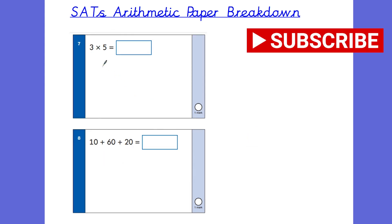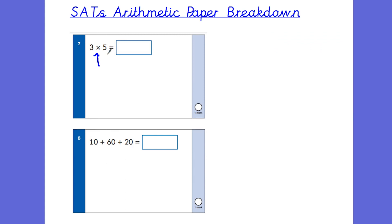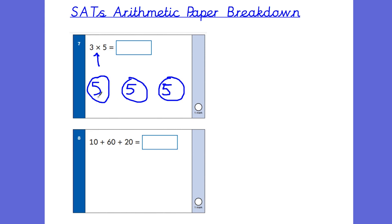Number 7 is another multiplication question, looking at groups of 5. So 3 groups of 5 — draw 3 groups: 1, 2, 3. One group of 5, two groups of 5, three groups of 5. Counting on in 5s: 5, 10, 15. If the child still struggles with that, you could actually get them to draw 5 in each group and add them all up to confirm it makes 15.